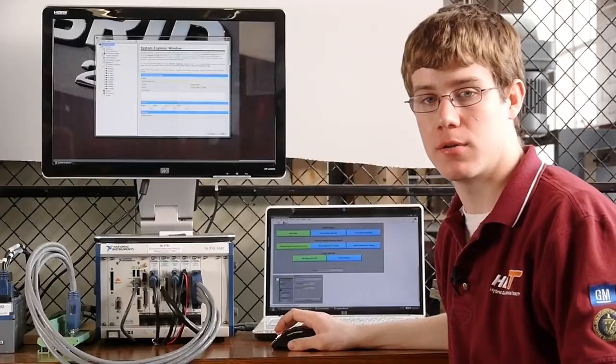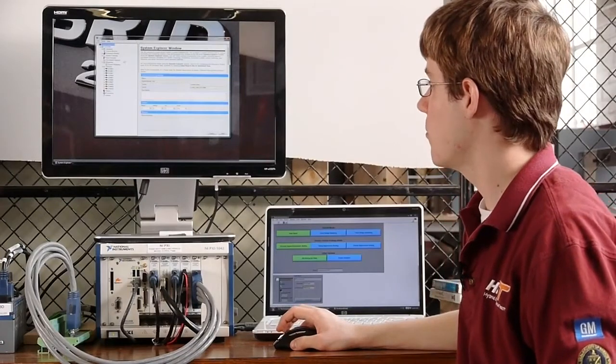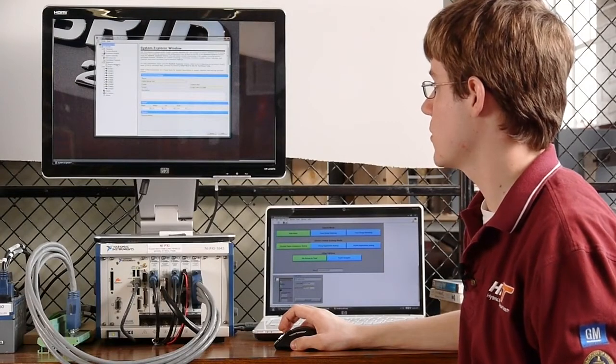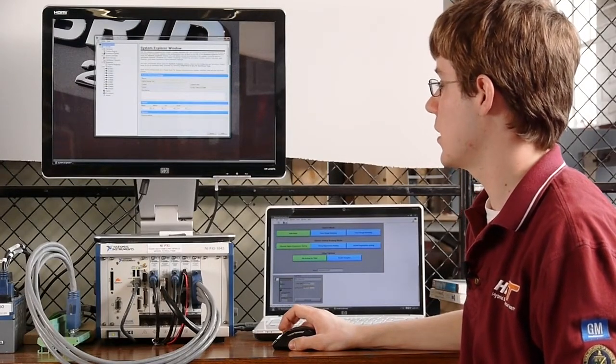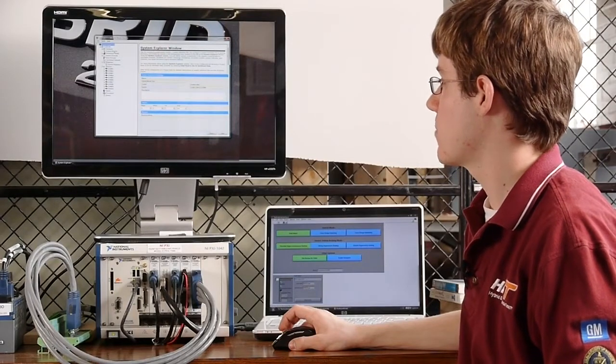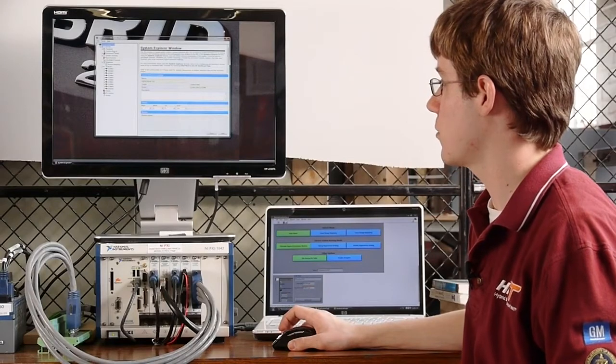Before we deploy the model, we can open the system explorer window in order to map inputs and outputs of the model to CAN messages and digital and analog signals, as well as create custom devices in LabVIEW to expand the functionality of VeriStand. For example, our power supply is controlled by a custom device.